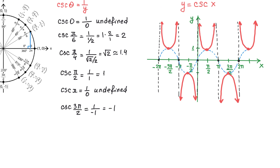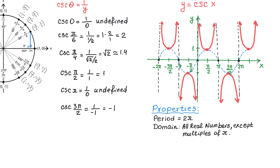Let's see a few properties of this function. The period of this function is 2 pi, just like the period of the sine function. If we look at the interval from 0 to pi, one part of the graph approaches positive infinity and the other part approaches negative infinity, and these two parts keep repeating to the right and to the left indefinitely. The domain is all real numbers except multiples of pi, where we have vertical asymptotes. The range includes all values from negative infinity to negative 1, and then all values from positive 1 to positive infinity. In the middle we have the sine function, and above and below we have the cosecant function.